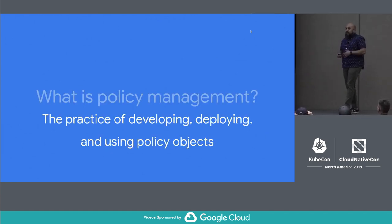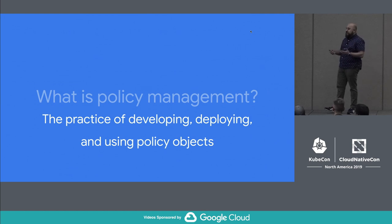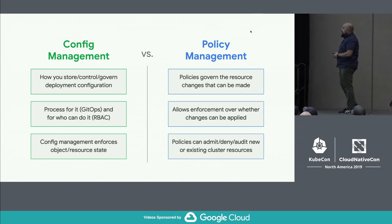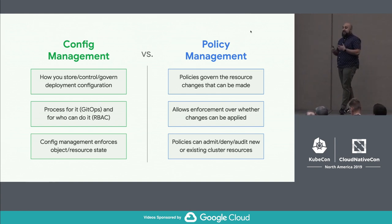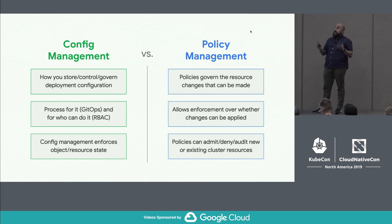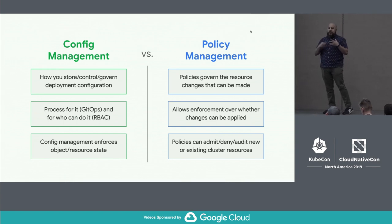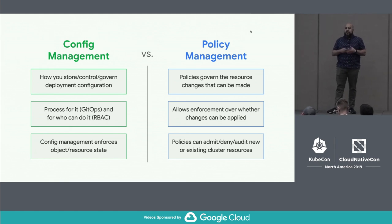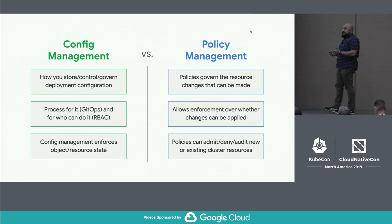Policy management is really the act of authoring, developing, deploying, and using those policies in a cluster environment or in a deployment of some type. When I talk about policy management, there's often a mental overlap with something like config management. The two are closely related but definitely distinct. Config management is about how you store, control, and govern resources or objects. There's typically a process around who can do config management, usually with Kubernetes RBAC controls, and a process around how to do it — something like GitOps.